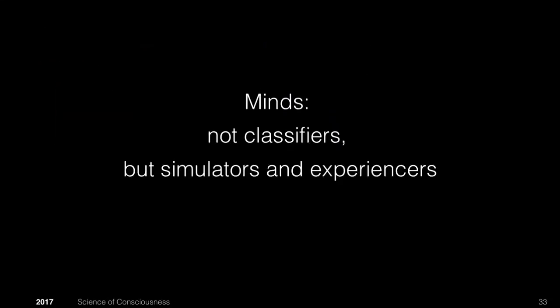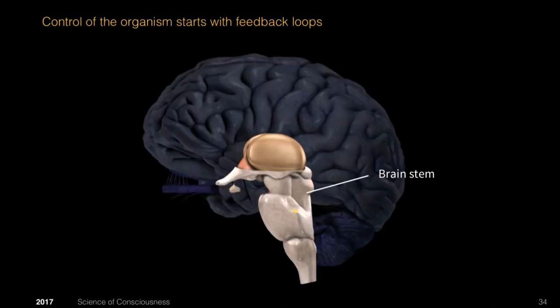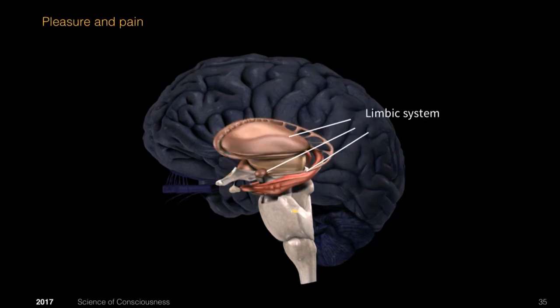So minds are not classifiers. They are simulators and experiencers. They start out with feedback loops because they are in the service of control of the needs of a social primate. Most of the feedback loops that we have are not available to our conscious interaction with them. For instance, we regulate our body temperature, our heart rate, our breathing patterns autonomously with a lot of feedback loops, many of which are in the brainstem. But for some things we need to control what we are doing and adapt our actions.